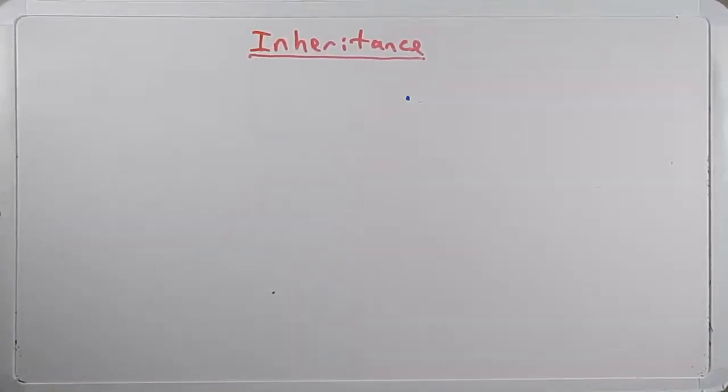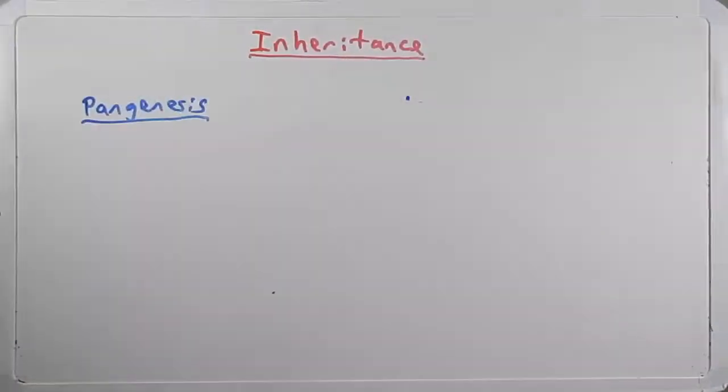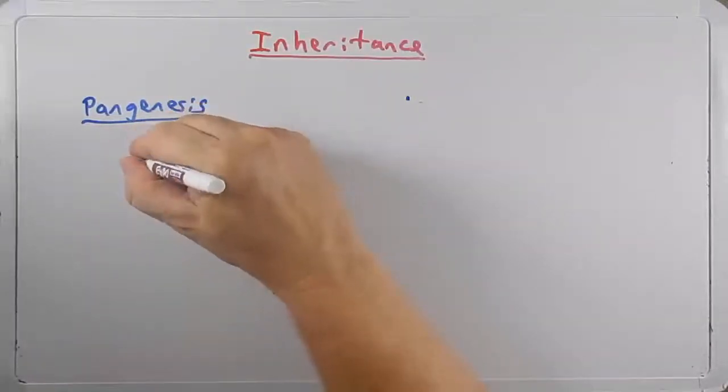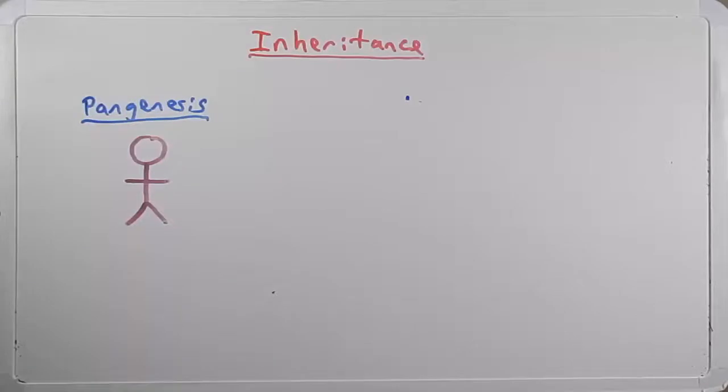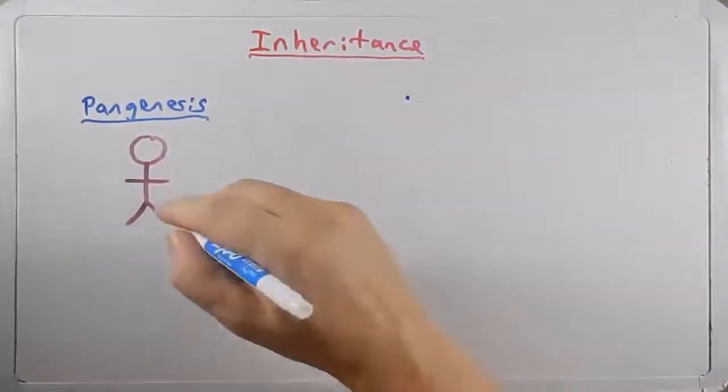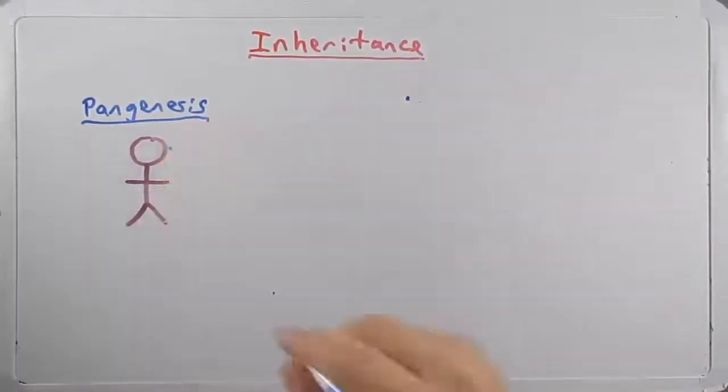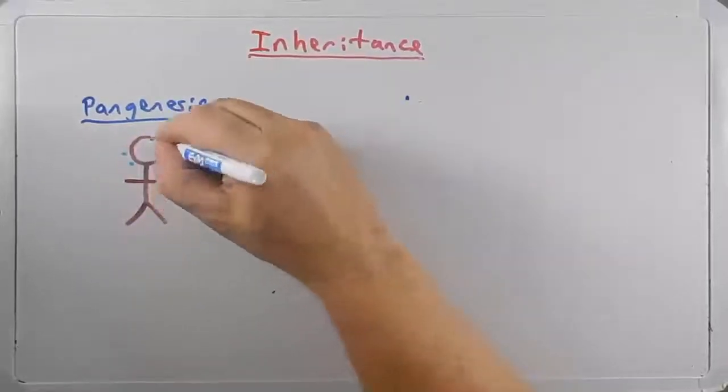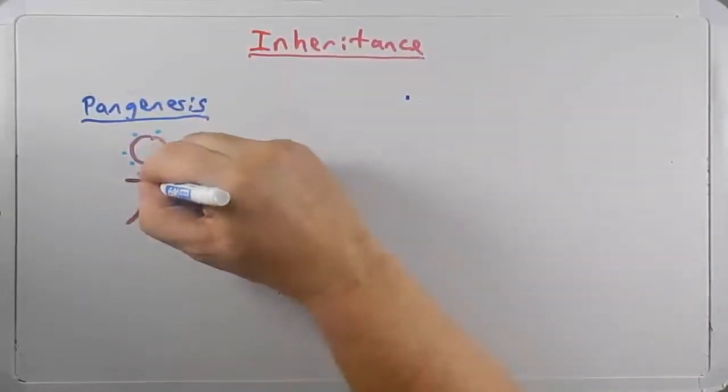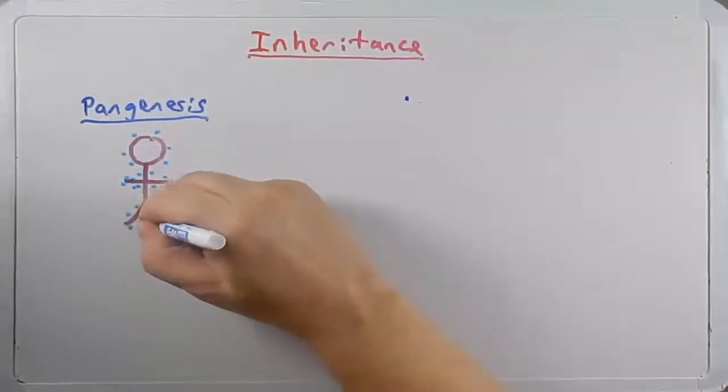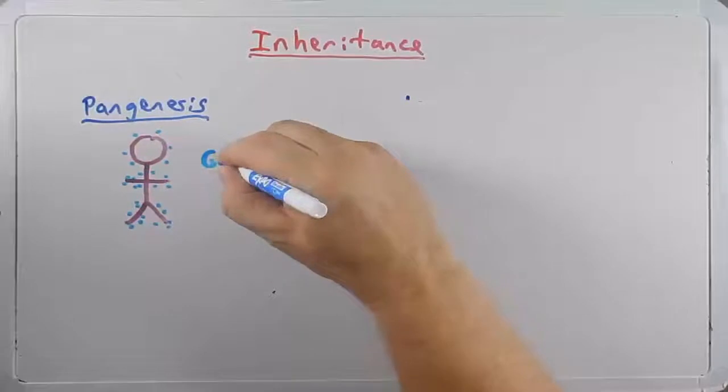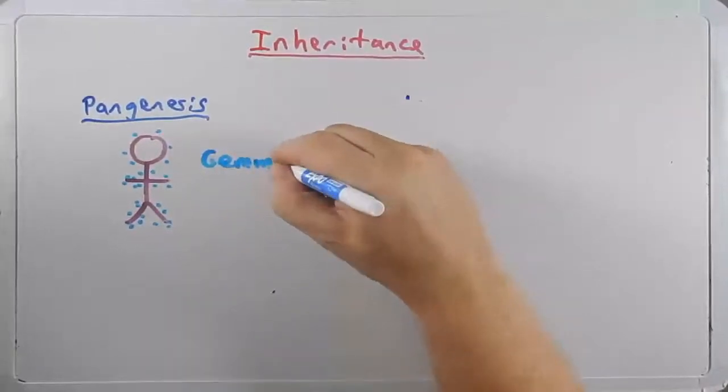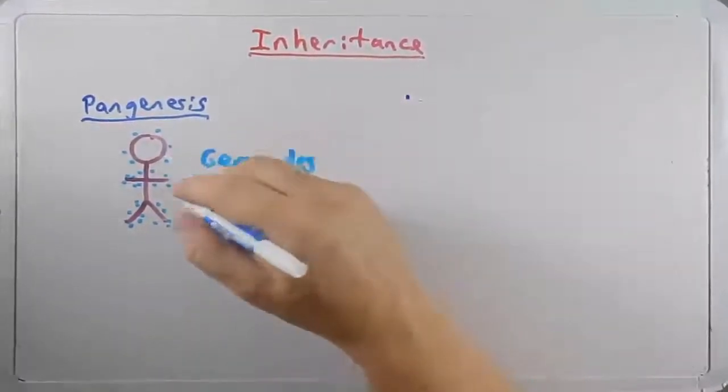Another theory that came along, made perhaps a little bit more sense, and that is called pangenesis. And in this idea, I'm going to draw an amazing looking stick figure here. What was hypothesized in this idea was that there were tiny little particles all throughout our body, in all of our tissues, in all of our limbs, on all of our parts. And these particles they called gemmules.